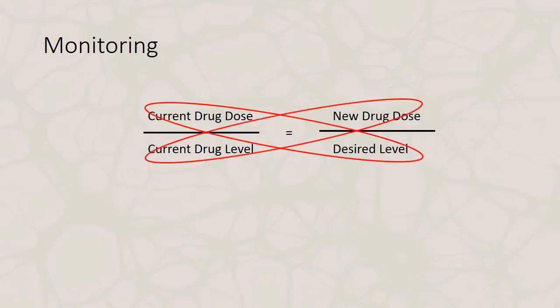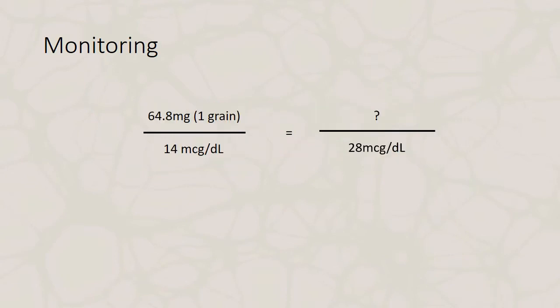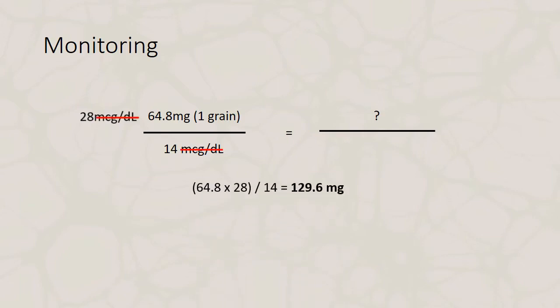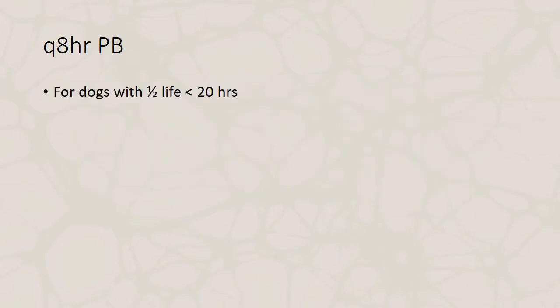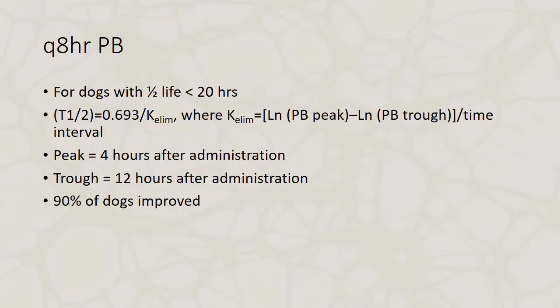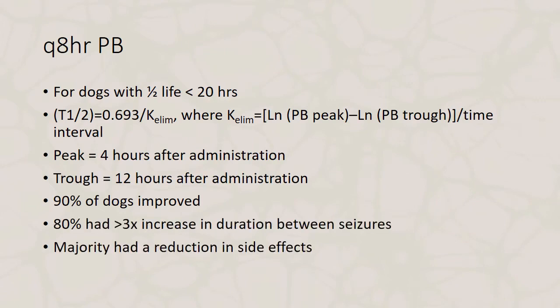For dose adjustment, use cross multiplication: multiply the current dose by the desired drug level, then divide by the current drug level to get the new dose. For patients with a short phenobarbital half-life (less than every 20 hours), a paper discusses potentially giving phenobarbital every 8 hours, including the equation for calculating half-life and study findings.